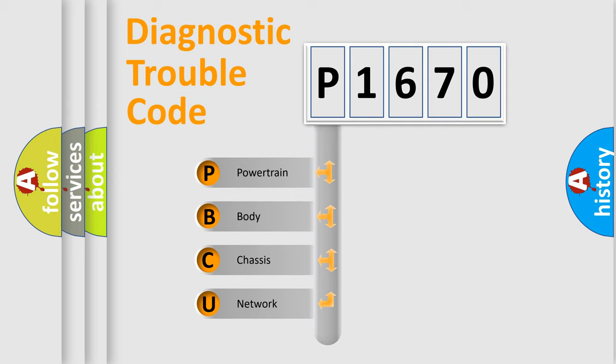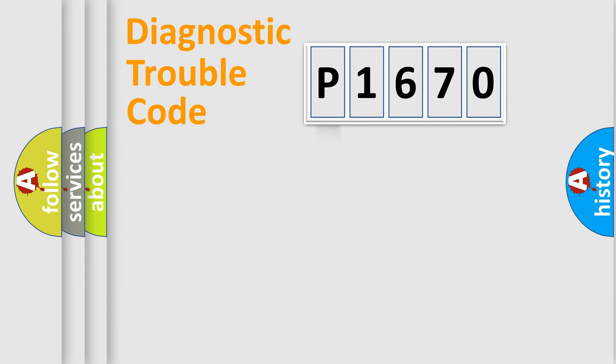We divide the electric system of automobile into four basic units: Powertrain, Body, Chassis, and Network. This distribution is defined in the first character code.